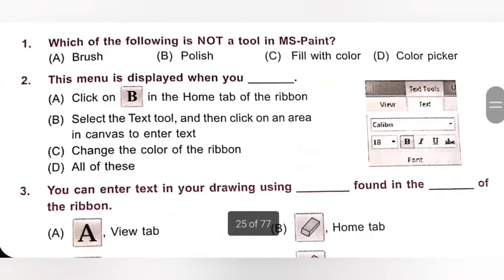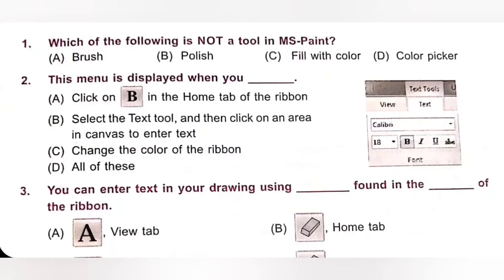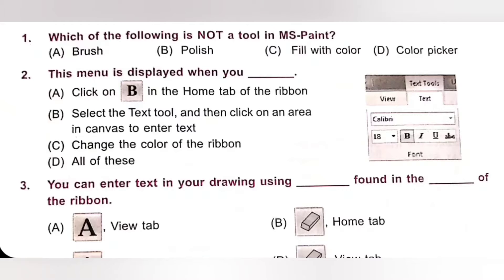Question 2: The menu is displayed when you — A. Click on B in the Home tab of the Ribbon, B. Select the Text tool and then click on an area in Canvas to enter text, C. Change the Color of the Ribbon, D. All of these. Select the Text tool and then click on an area in Canvas to enter text — then this menu will be displayed. Option B is the correct answer.